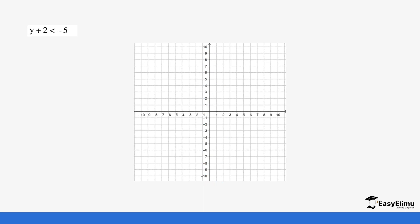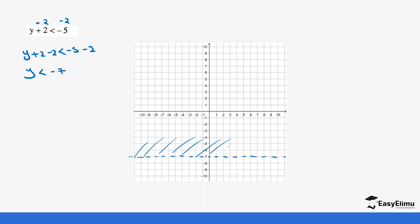Now we have an example on the y-axis that requires some calculation. We subtract 2 from both sides: y + 2 - 2 < -5 - 2, which gives us y < -7. So the values of y are less than negative 7. We go to negative 7 on the y-axis. Since there is no equal sign in our answer, we use a dotted line. We want all values less than negative 7, so we shade everything above negative 7 as the unwanted region.